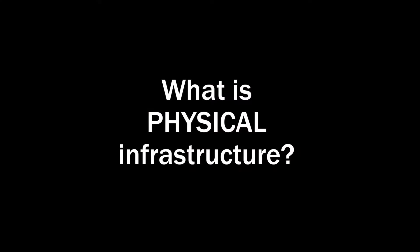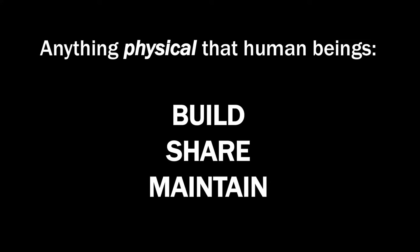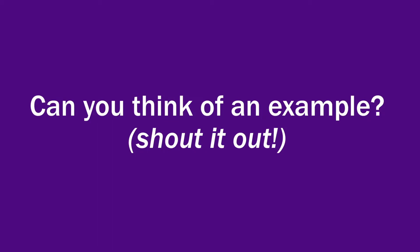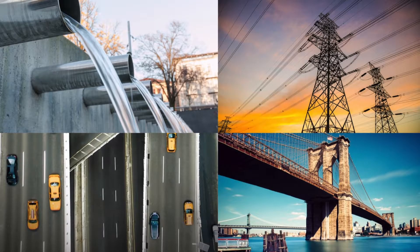So what's physical infrastructure? Physical infrastructure is anything physical that human beings build, share, and maintain. Can you think of an example? Buildings, roads, irrigation systems — those are all good examples.